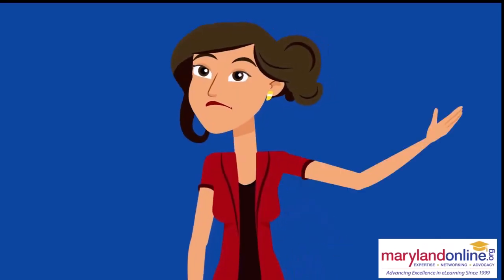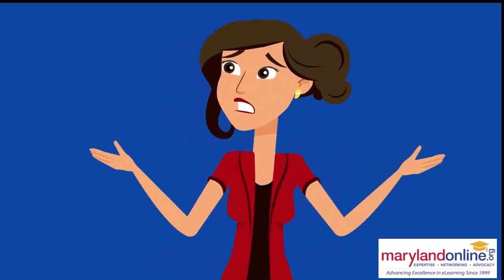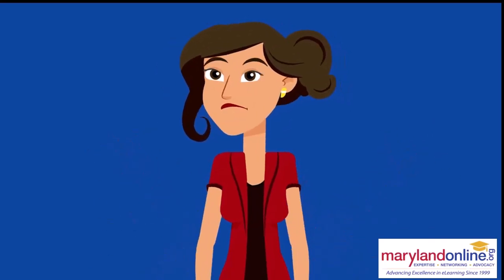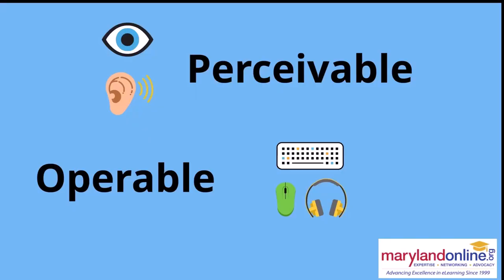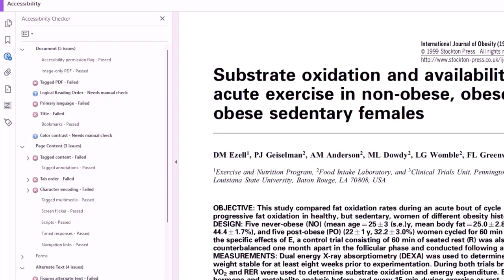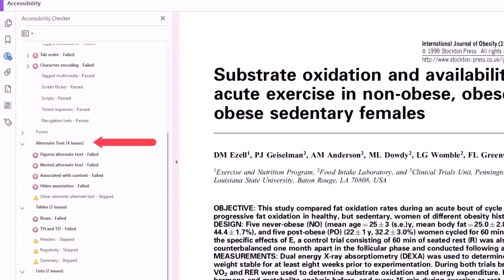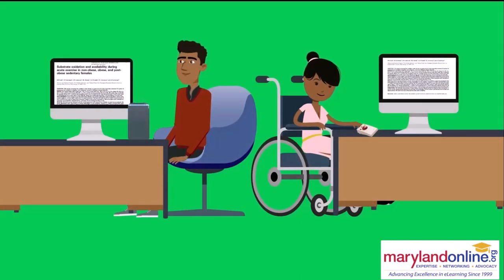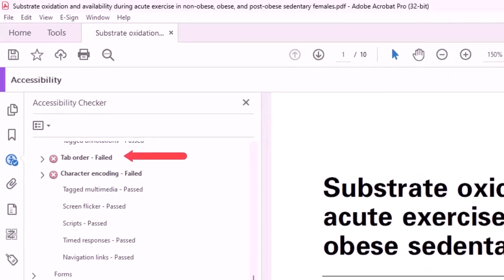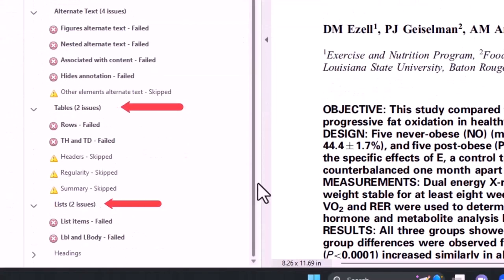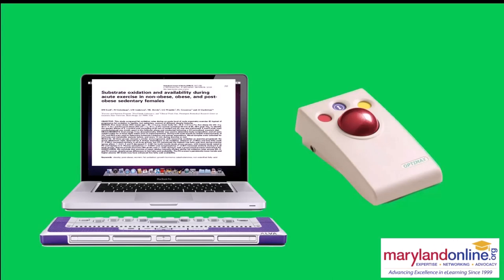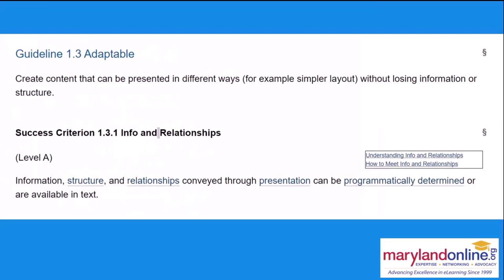You may be wondering, Debbie, what does all of this mean exactly? So let's rewind. Remember that we said that digital information needs to be perceivable and operable — see character encoding, tagging, alternative text. This means that not all students can recognize and understand my information. See tab order, tables, lists — this means that not all students can navigate my information.